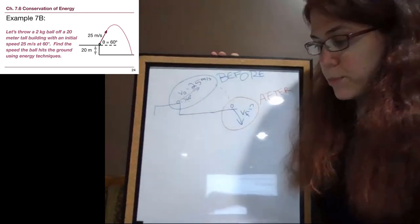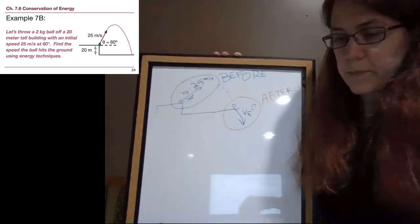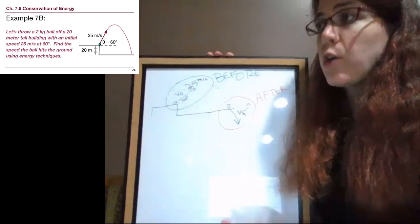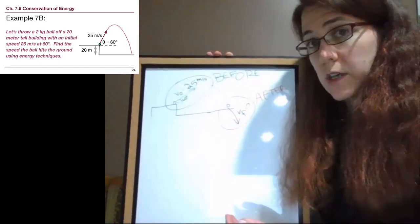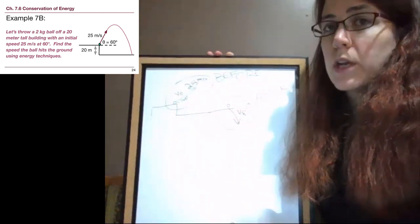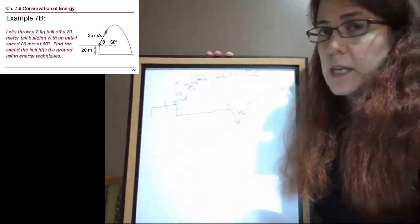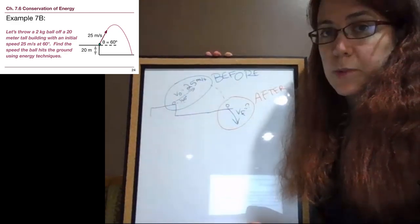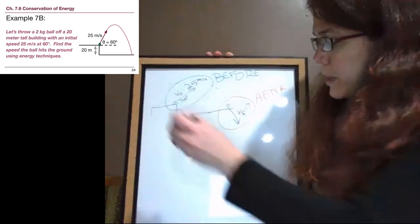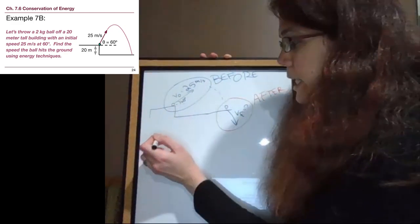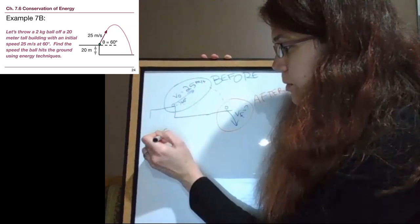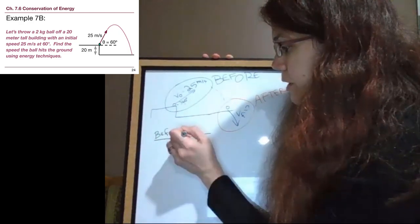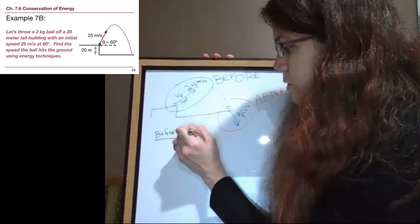Now just like before with our problems like this, every single time we do an energy problem we need to go through the process of asking ourselves those questions that we talked about in the first example and in the lecture slides. Are we moving? Are we higher? And later on in the chapter, we'll be asking other questions as well. But what we can do is right at the beginning of our setup, we can make that little chart that helps make sure that we've asked ourselves all of these questions.